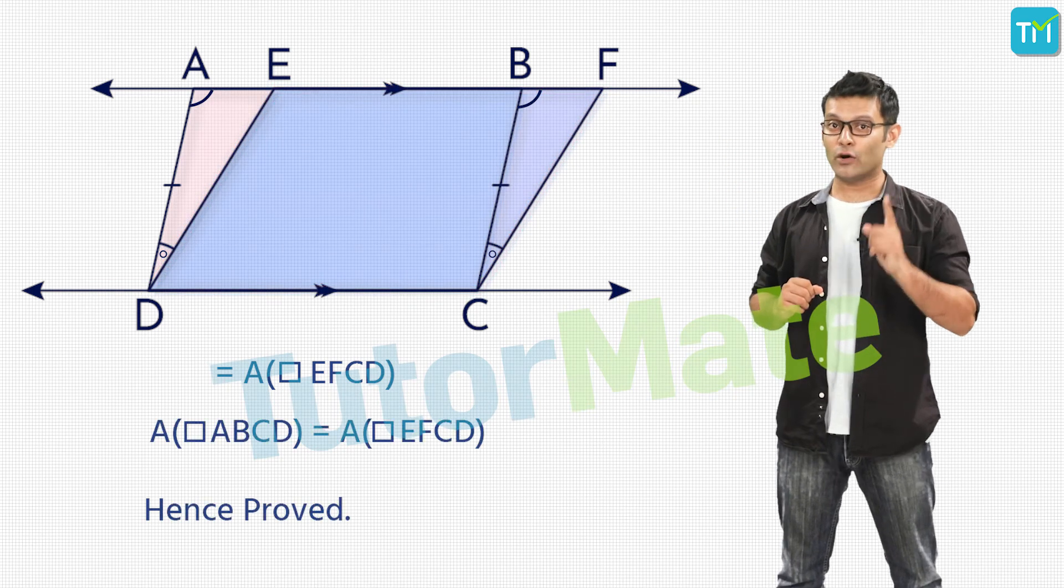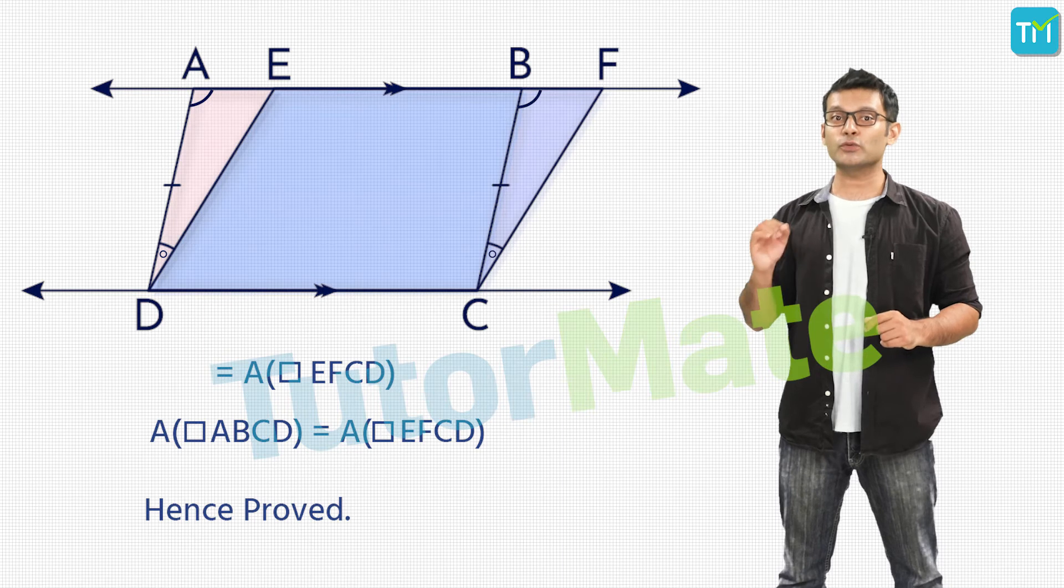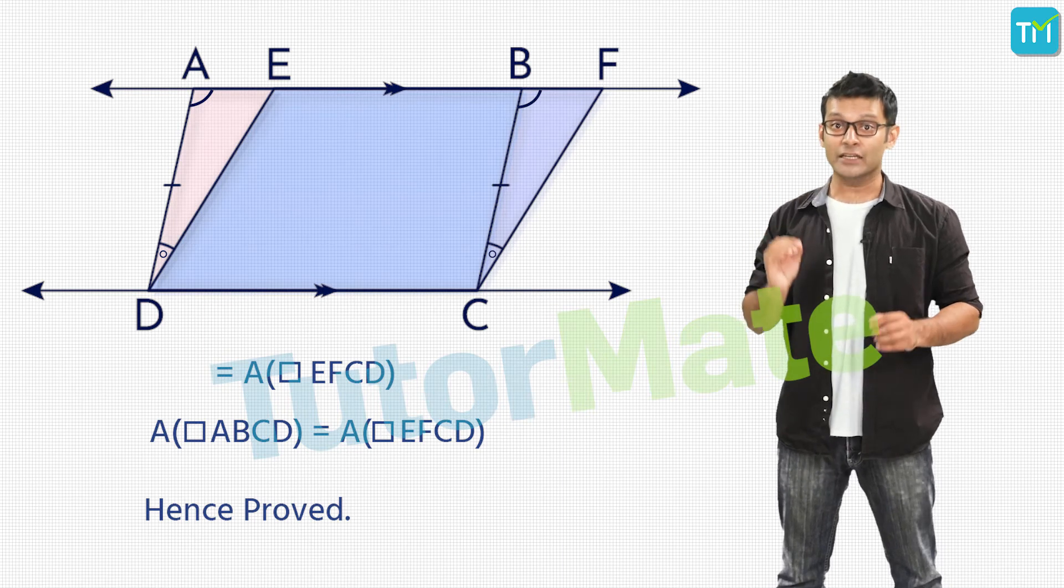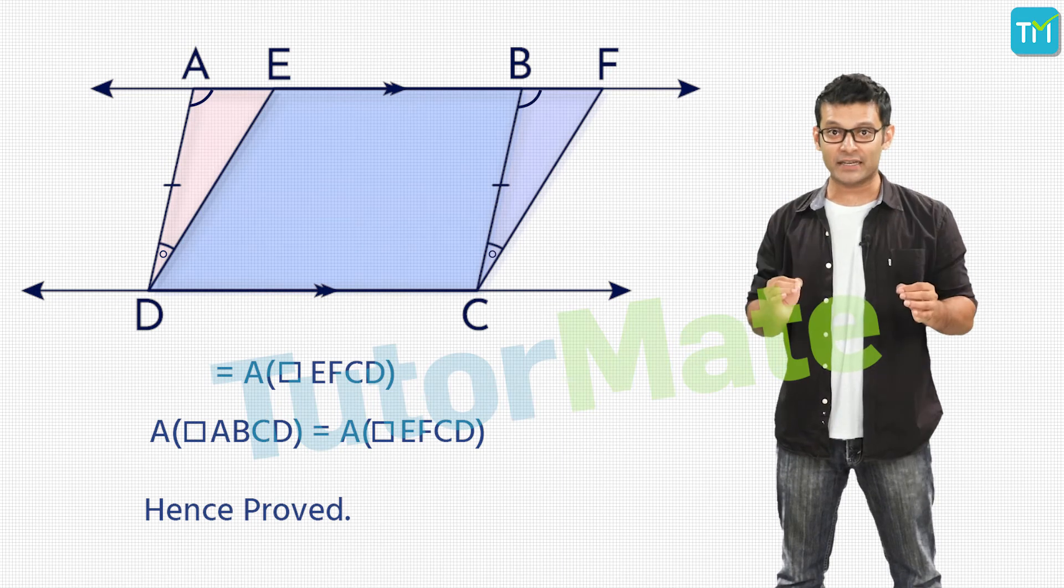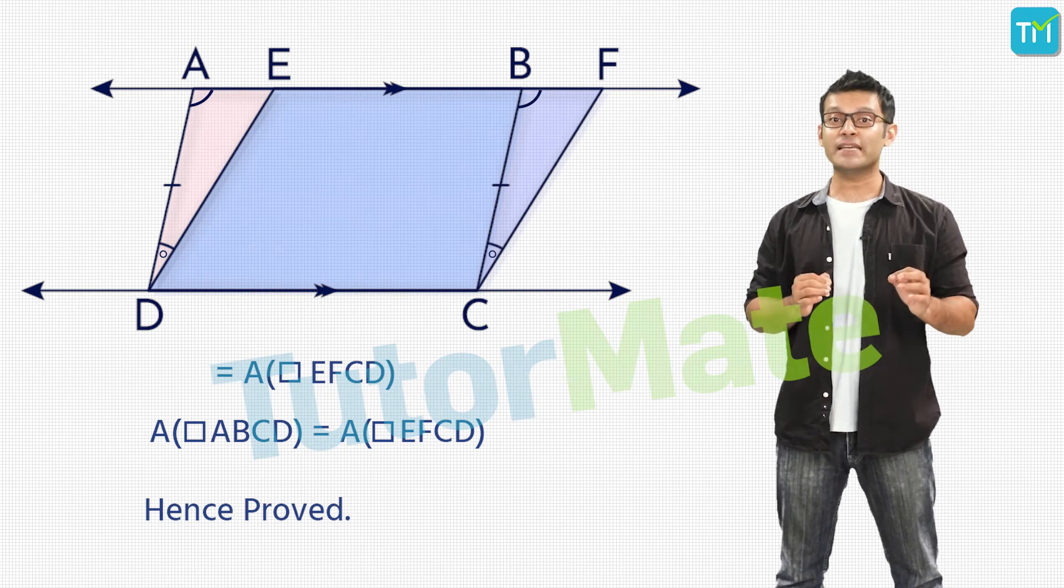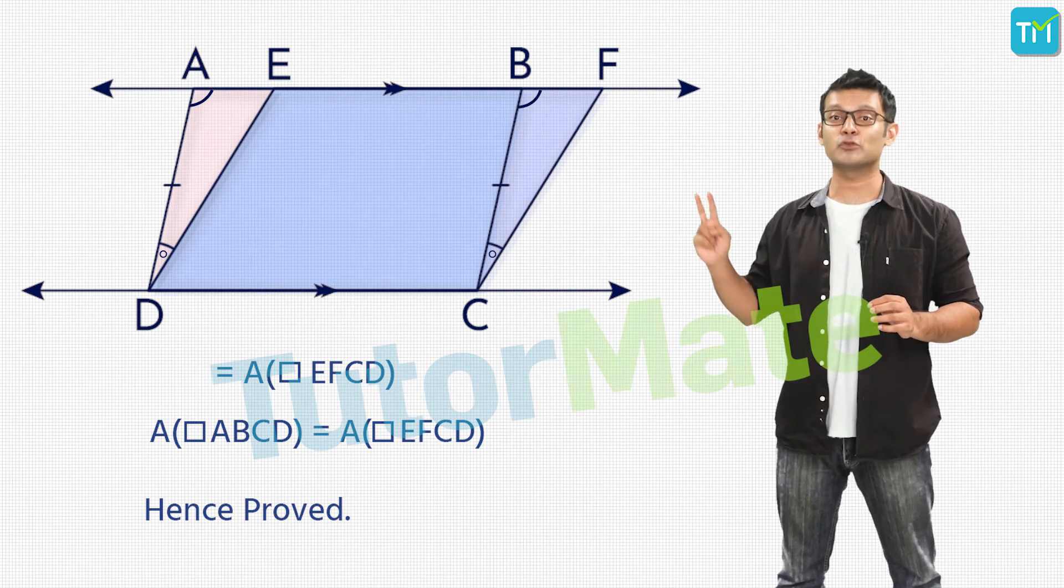Therefore, we have area of ABCD is equal to area of EFCD and with that we have proved that both parallelograms have the same areas when they share a common base and lie between the same two parallel lines.